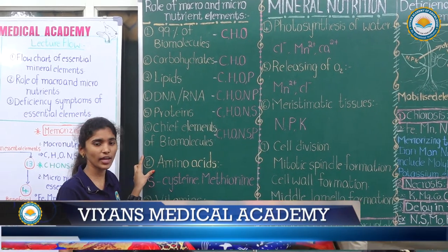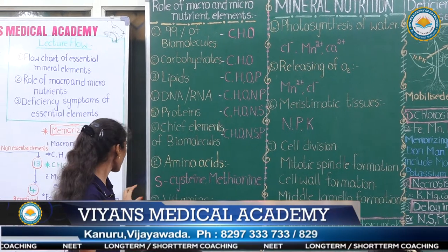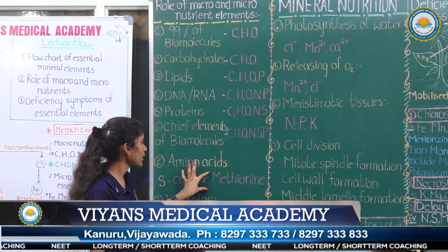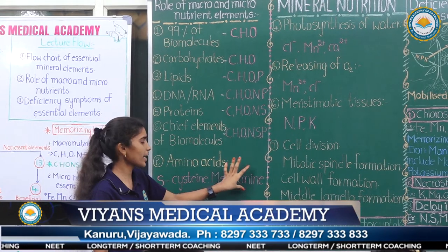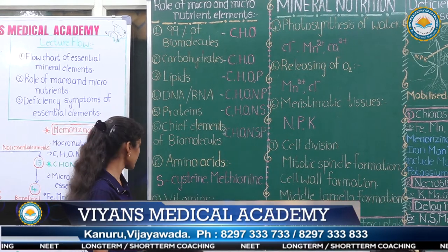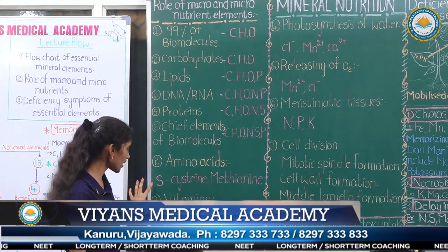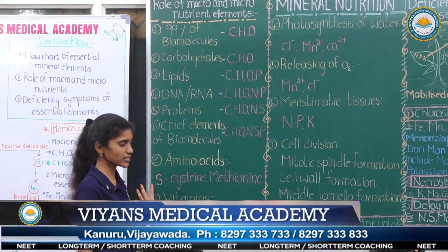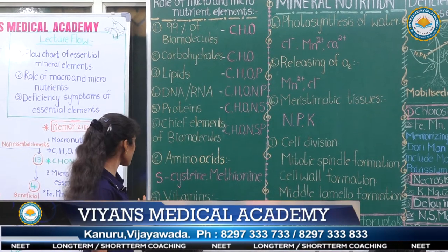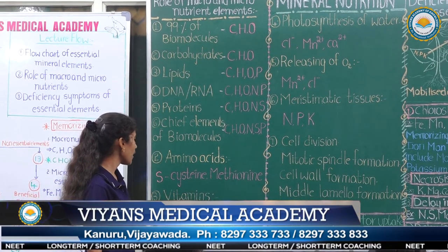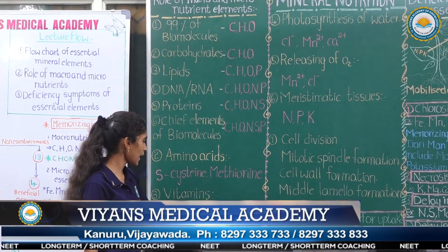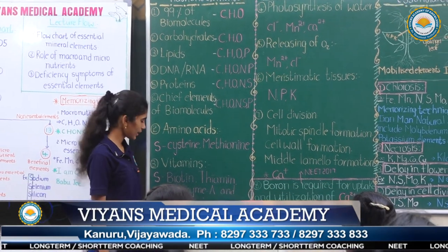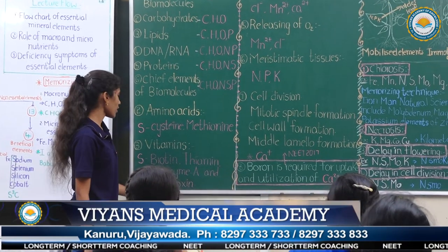Second, amino acids: sulfur is present in cysteine and methionine amino acids. Third, vitamins: sulfur is present in biotin, thiamine, coenzyme A, and pyridoxine.